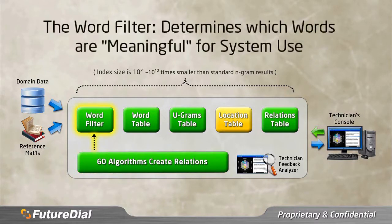One of the components is the word filter. The word filter takes the input from the domain data and reference materials and determines which words are meaningful for using within the system. Meaningful words could include things like device model numbers, error terms, and others.